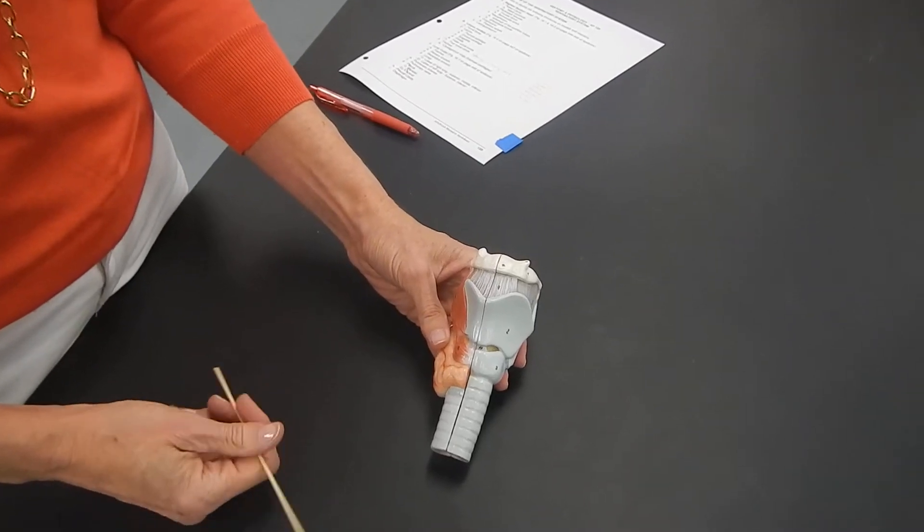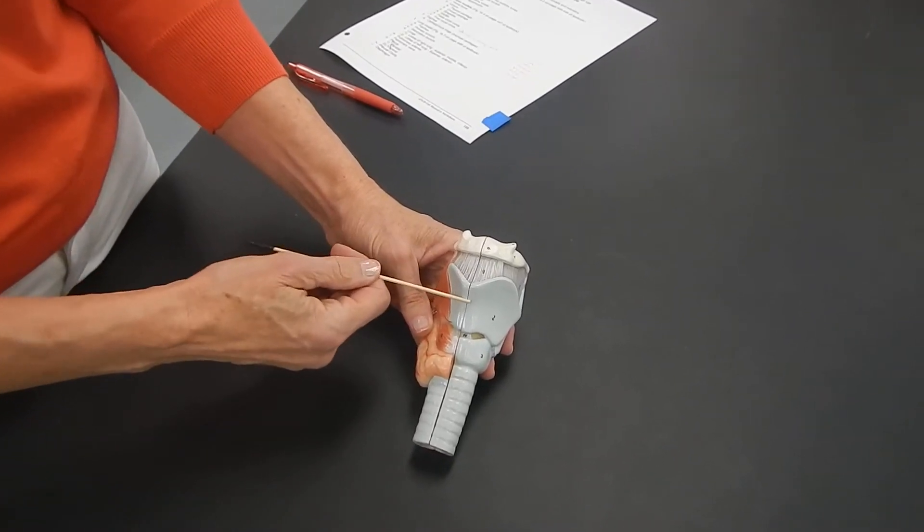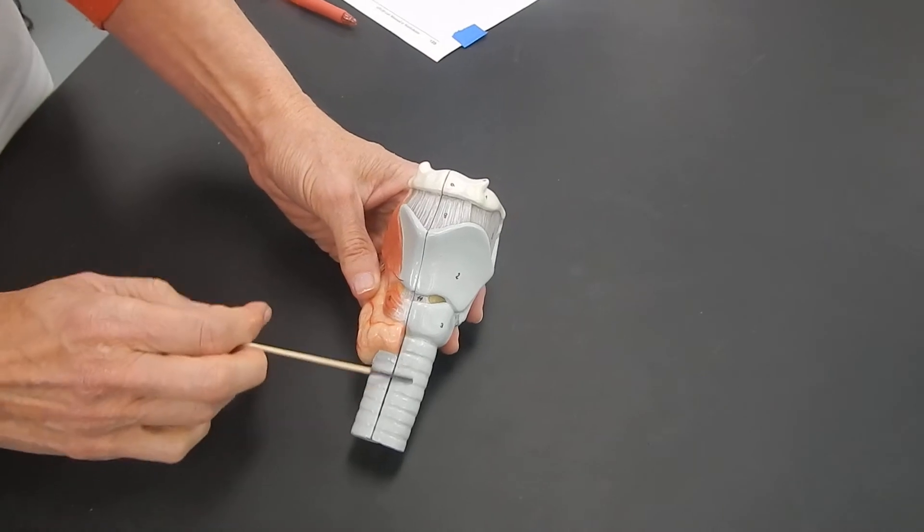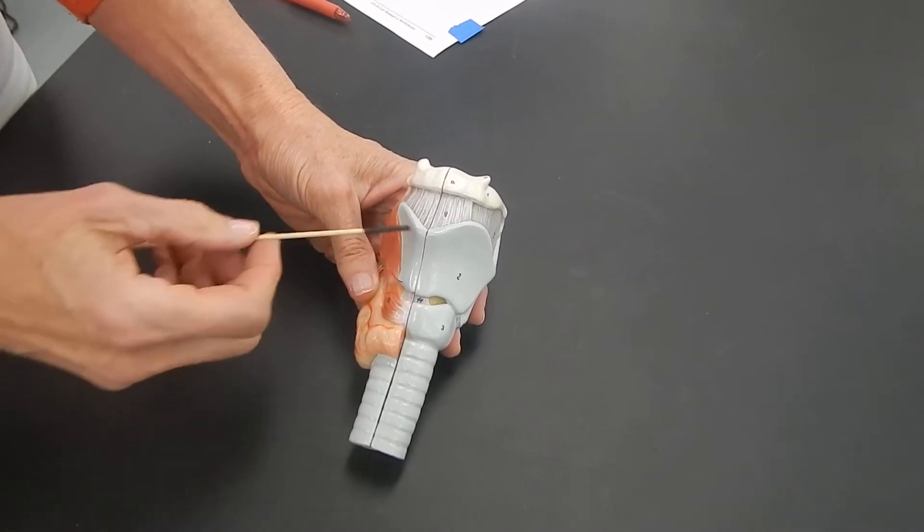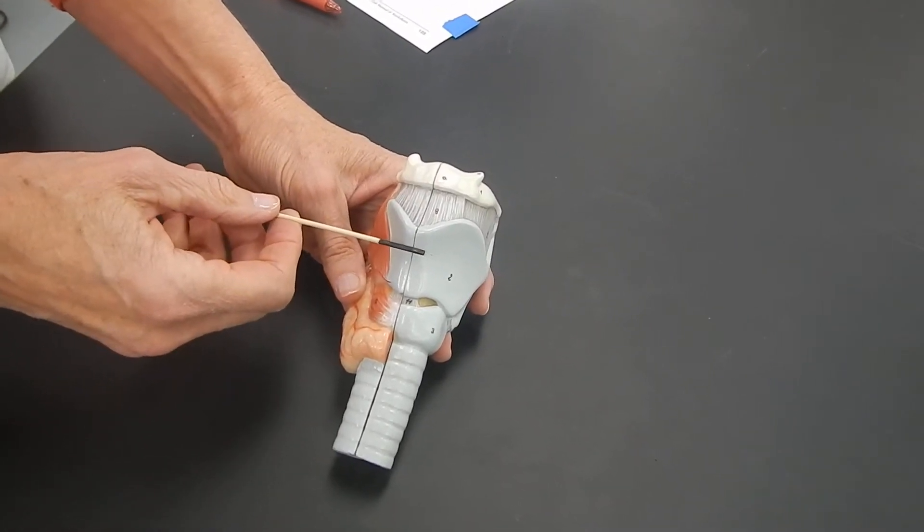The next model of the respiratory system is this model of the larynx with part of the trachea. The larynx is also known as your voice box.